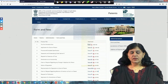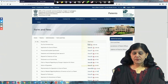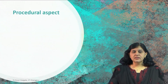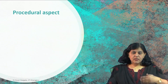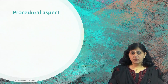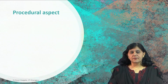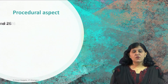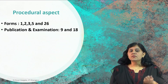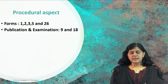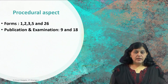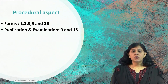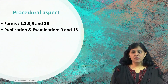Now we have a good idea about forms and fees, including maintenance fees. We will see the procedural part. There are forms 1 to 30, and we have seen the fee structure. If you want to file a patent, which forms are exactly necessary? Form numbers 1, 2, 3, 5, and 26 — if you are taking help of a patent attorney or agent — are required. For a normal application, you will file Form 1, 2, 3, and 5, and give the requisite fee.